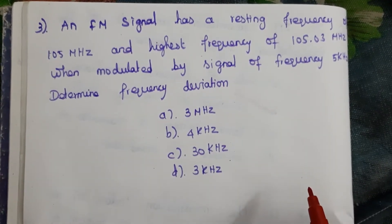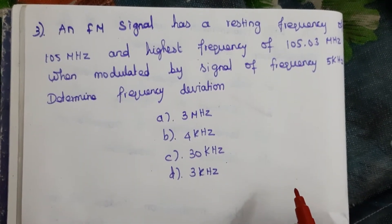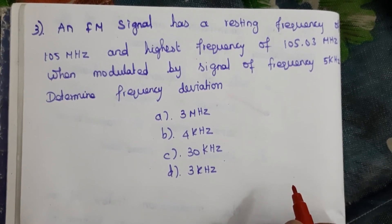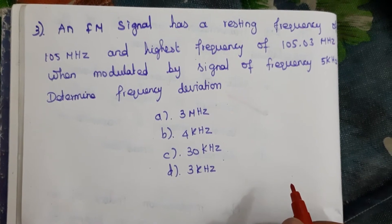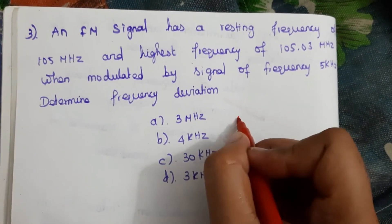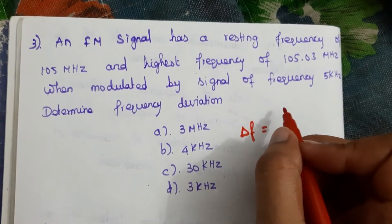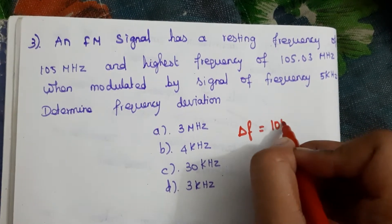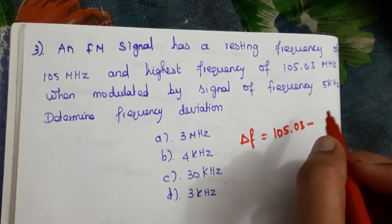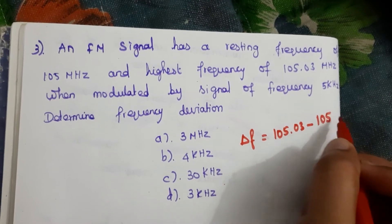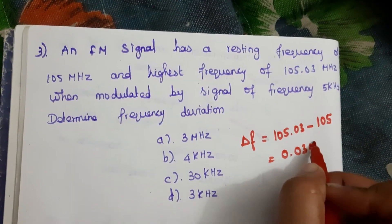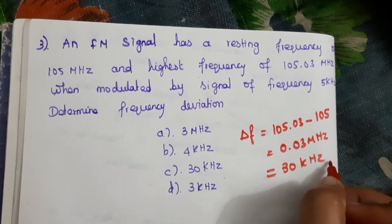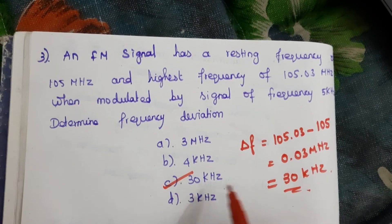Third question: An FM signal has a resting frequency of 105 MHz and a highest frequency of 105.03 MHz, modulated by a signal of 5 kHz. Find the frequency deviation. Δf = highest frequency − resting frequency = 105.03 − 105 = 0.03 MHz = 30 kHz. The answer is C.